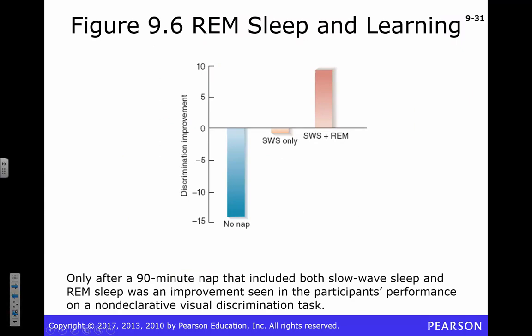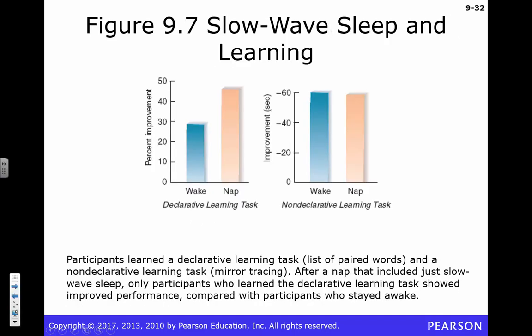Here's a graph showing that folks who were able to take a 90-minute nap containing slow wave sleep, or a nap containing both slow wave and REM sleep, showed massive improvement on a memory task compared to those with no nap. Separately, for declarative memory tasks, folks who got a nap were better at tasks like remembering which words were paired together.